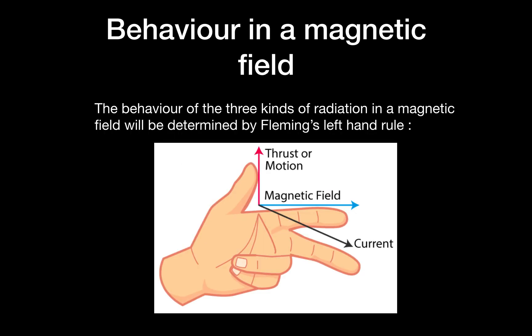Now we'll talk about the behavior of these three radiations in a magnetic field. This video assumes you know how to use Fleming's left hand rule. The thrust of motion or force is on the thumb, the magnetic field is on your first finger, and the current is on your middle finger. Note that current is the conventional current, the direction of positive charge flow. So even here the current is the flow of positive charge.